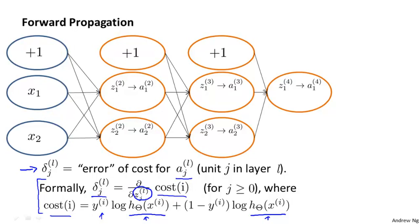And so that will end up changing the cost function. And again, really, this is only for those of you that are expert in calculus. If you're familiar with, if you're comfortable with partial derivatives, what these delta terms are is they turn out to be the partial derivative of the cost function with respect to these intermediate terms that we're computing. And so they're a measure of how much would we like to change the neural network's weights in order to affect these intermediate values of the computation, so as to affect the final output of the neural network h of x, and therefore affect the overall cost. In case this last part of this partial derivative intuition, in case that didn't make sense, don't worry about it. The rest of this we can do without really talking about partial derivatives.